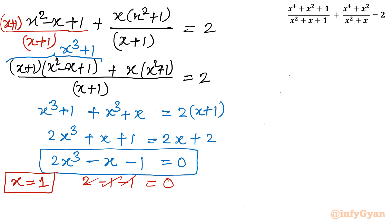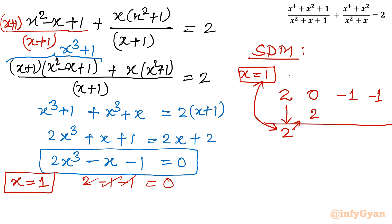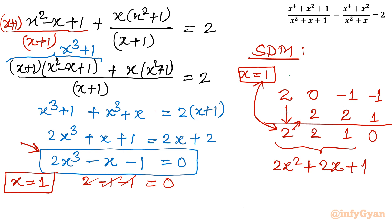Since x = 1 is a root, we use synthetic division. The coefficients of 2x³ + 0x² − x − 1 are 2, 0, −1, −1. Dividing by x = 1: bring down 2; 2×1 = 2, so 0+2 = 2; 2×1 = 2, so −1+2 = 1; 1×1 = 1, so −1+1 = 0. The resulting quadratic is 2x² + 2x + 1 = 0.